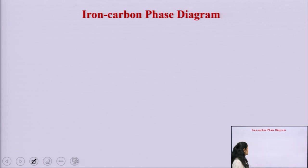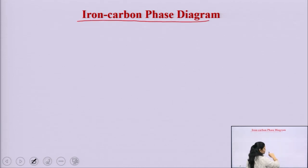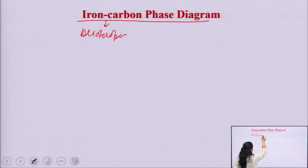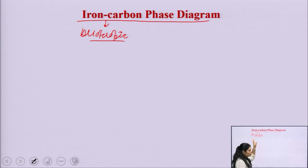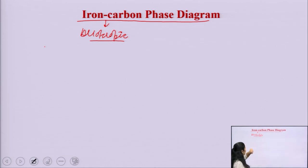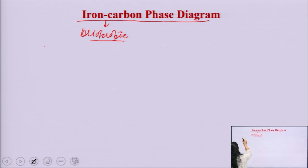Next, we come to the iron carbon phase diagram. We know that iron is allotropic in nature. What do we mean by allotropic? Allotropic means the element exists in different phases — the form remains iron, but the phase structure is different. Before drawing the iron carbon phase diagram, we will discuss the allotropic nature of iron.